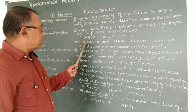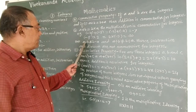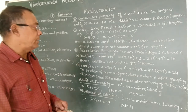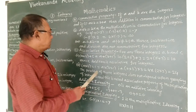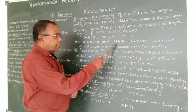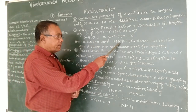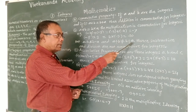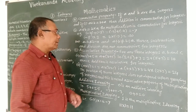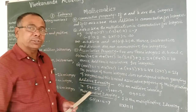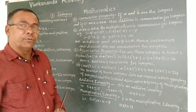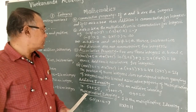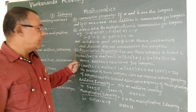However, we know that a minus b and b minus a are not equal. Similarly, a divided by b is not equal to b divided by a. This means subtraction and division are not commutative for integers.